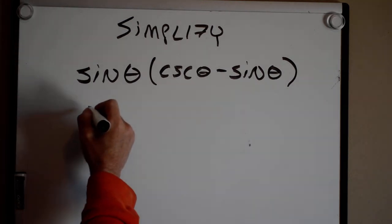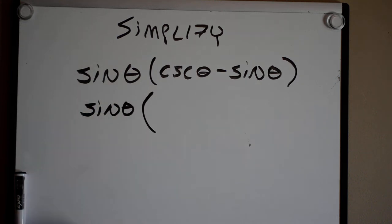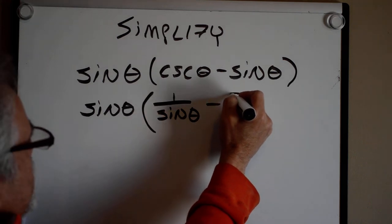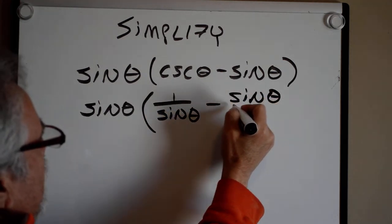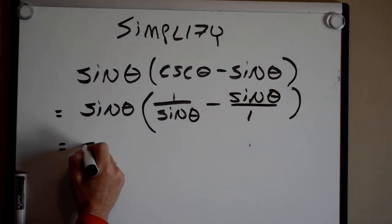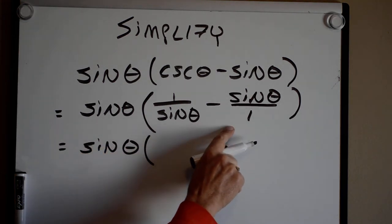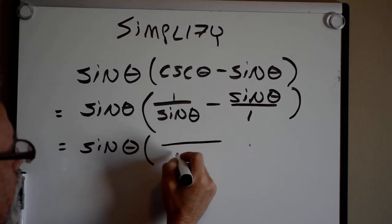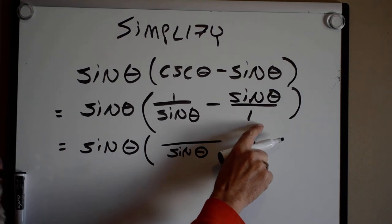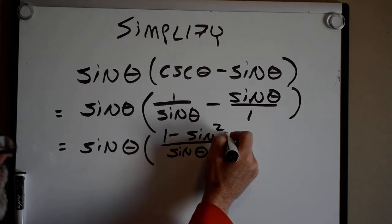So, this guy is going to become the sine of theta. And remember that cosecant is the same as 1 over the sine of theta minus the sine of theta. Since I have a fraction, I'm going to put this guy as over 1. So, this is equal to the sine of theta times, I'm going to have that common denominator, which is sine theta. Put it under one fraction bar, sine of theta. So when I multiply by sine, I have to multiply the numerator. That becomes 1 minus the sine squared theta.